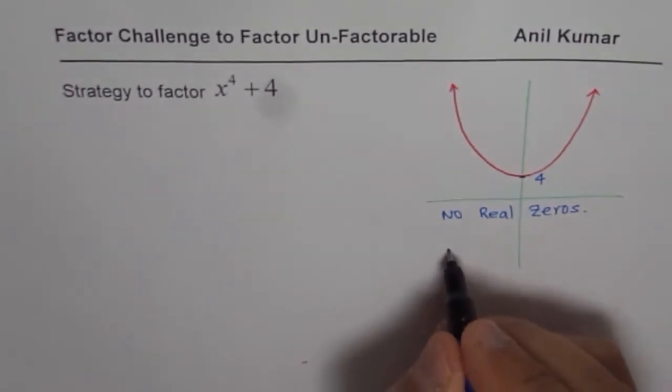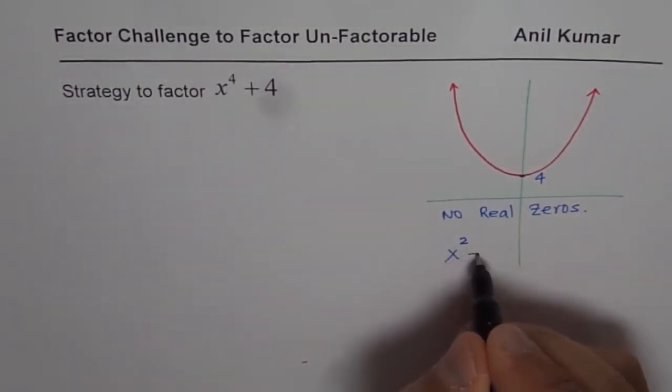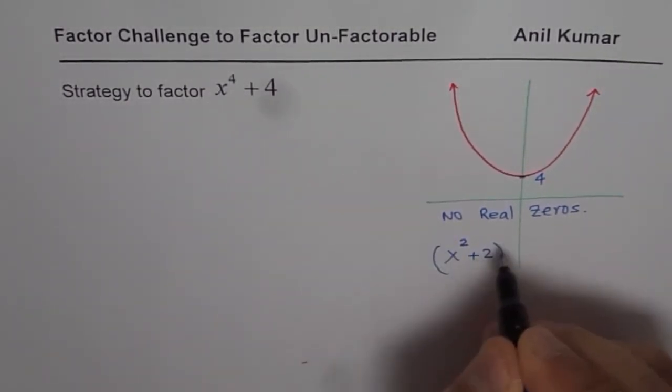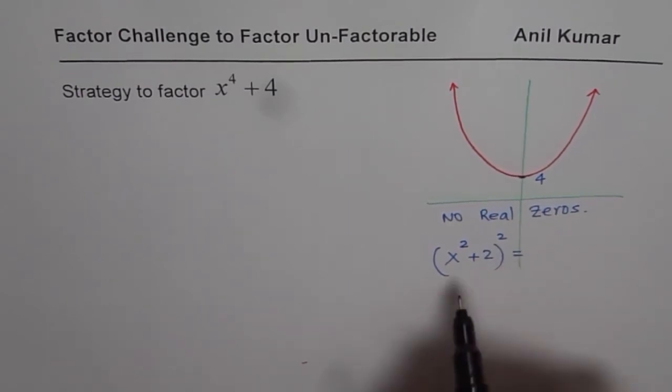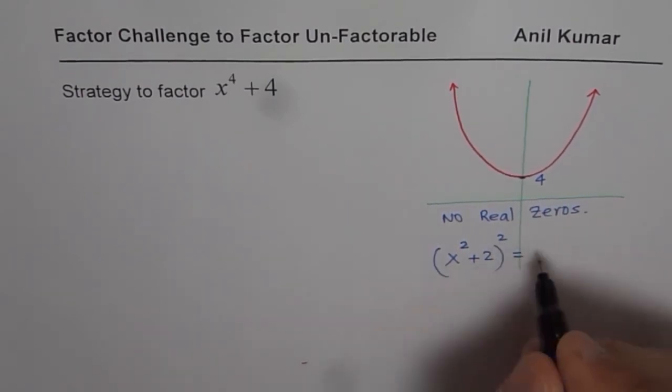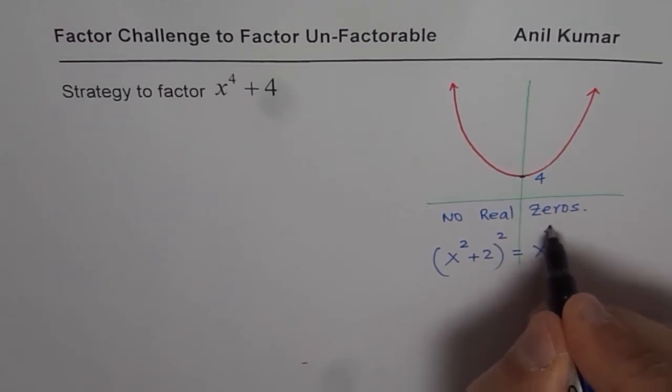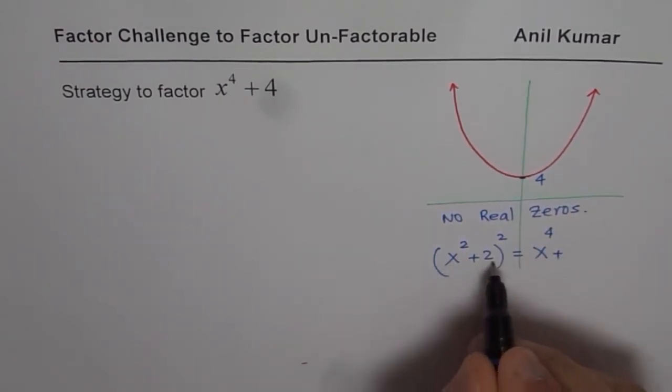Now think about x square plus 2 whole square. What is this equal to? Now x square plus 2 whole square could be written as x to the power of 4 plus 2 times ab...